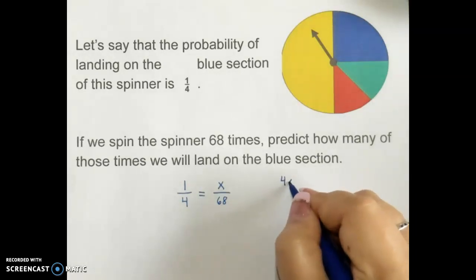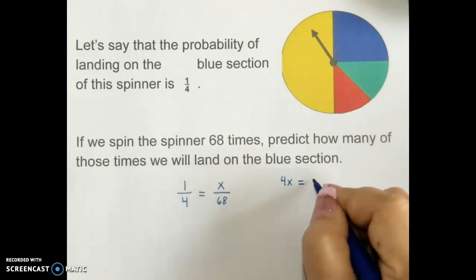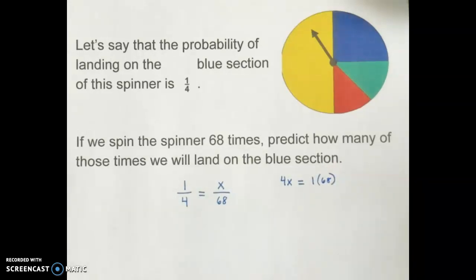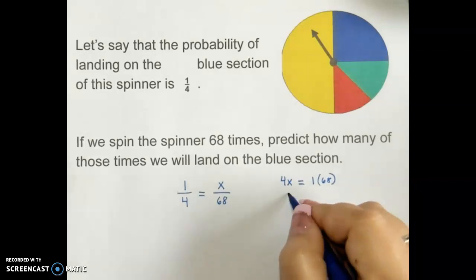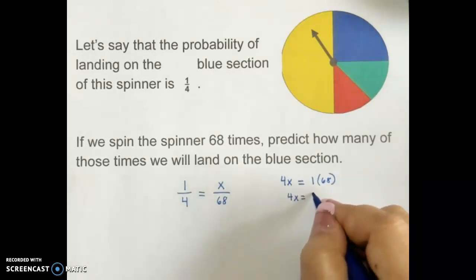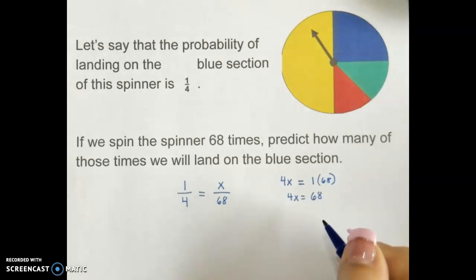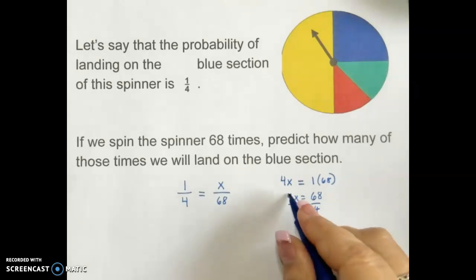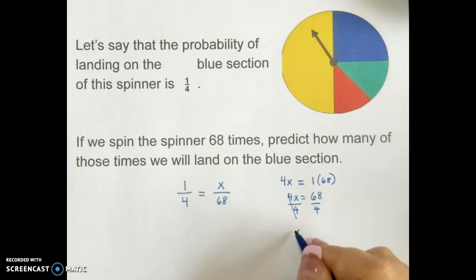And using my cross products, I'm going to say 4 times x is equal to 1 times 68, which means 4x equals 68. My inverse operation is going to be to divide by 4 to isolate my variable. My 4s are going to cancel each other out here, and x will be equal to 17. Go ahead and pause the video and write a sentence about what that answer actually means in this problem.